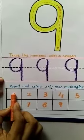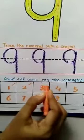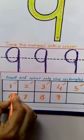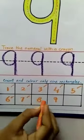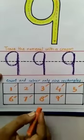1, 2, 3, 4, 5, 6, 7, 8, 9. 9 rectangles.